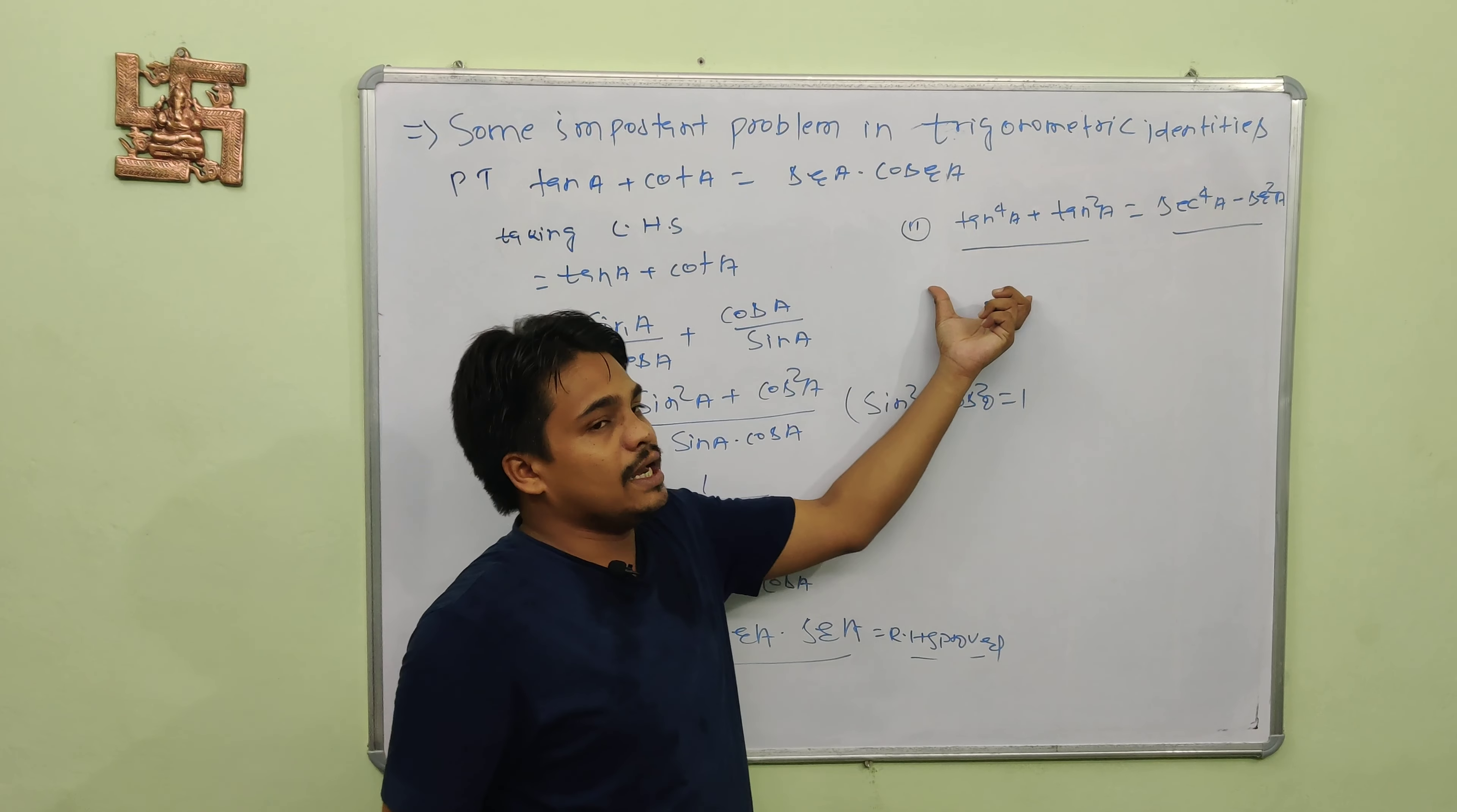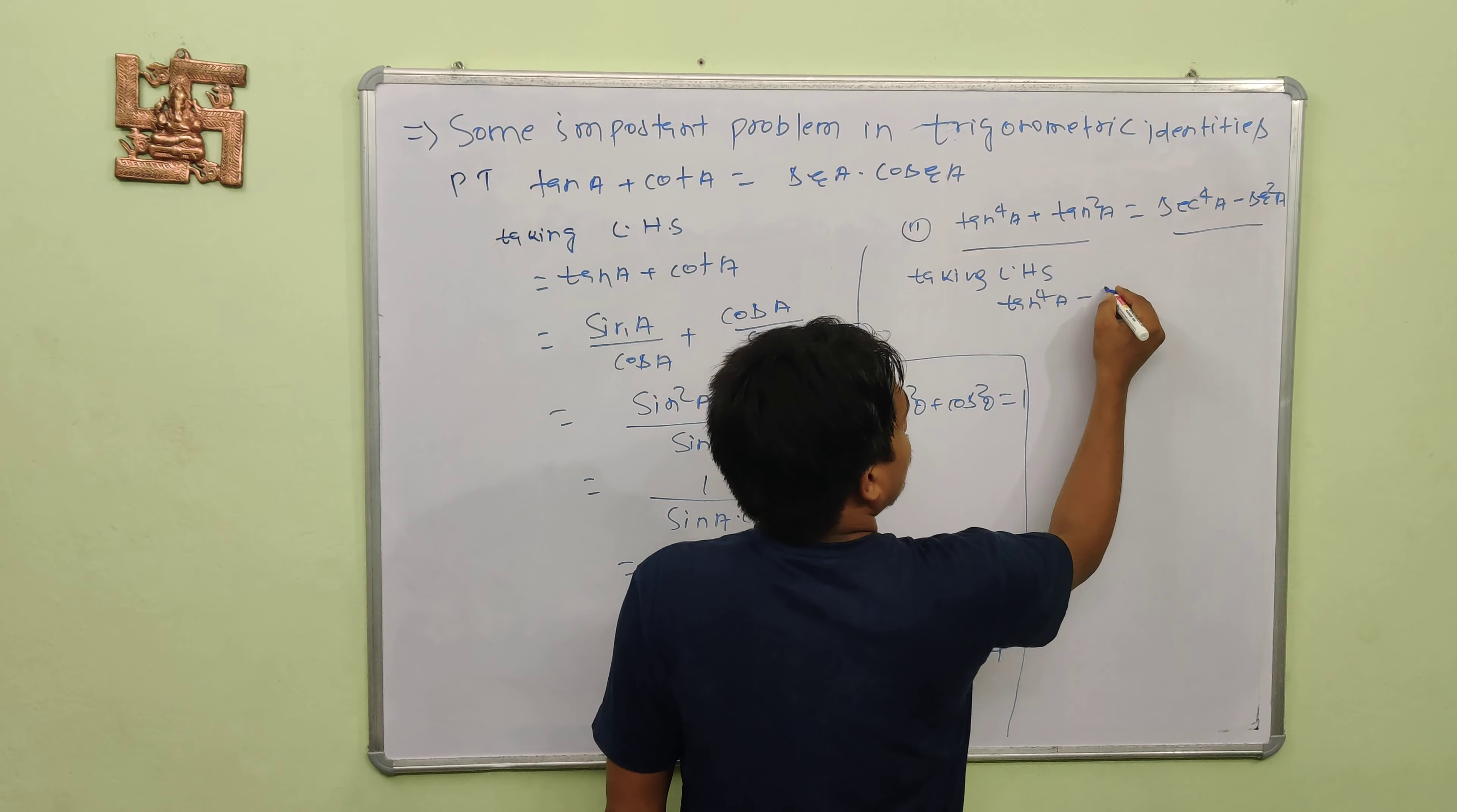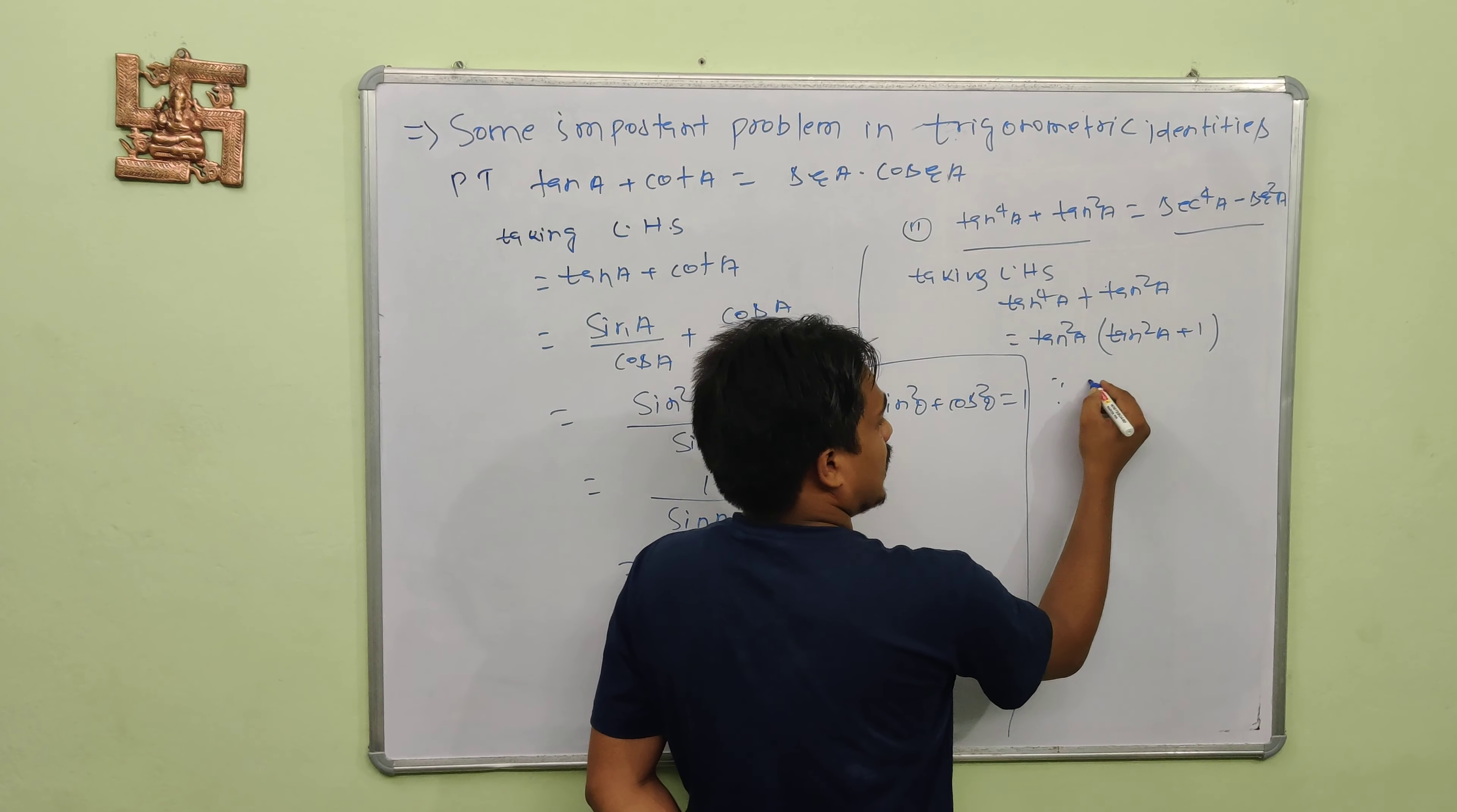What can we do? We proceed with LHS. In LHS we have tan to the 4th A plus tan squared A. We can take tan squared A common and make it tan squared A times tan squared A plus 1.